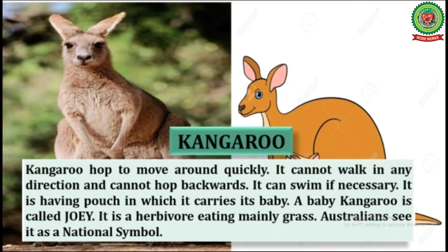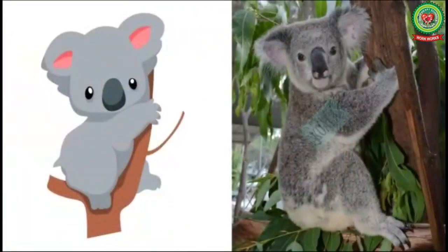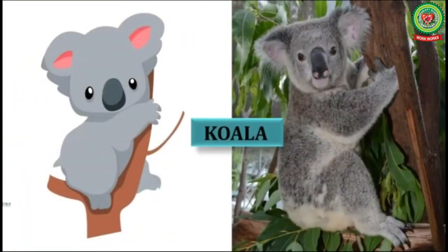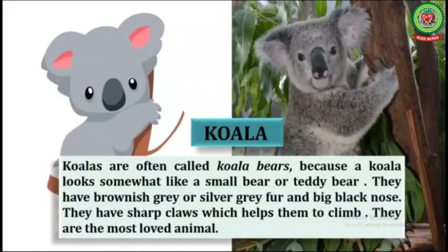Number two is koala. Koalas are often called koala bears because a koala looks somewhat like a small bear or teddy bear. They have brownish gray or silver gray fur and a big black nose. They have sharp claws which help them to climb. They are the most loved animal.